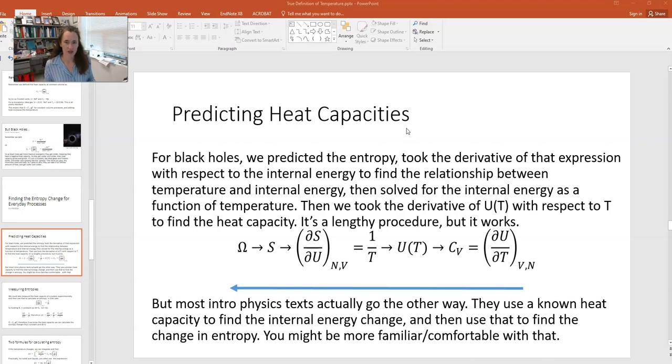Then we used the true definition of temperature, which is partial s with respect to u is 1 over T holding N and V constant, and got the internal energy as a function of temperature. Once we had the expression for u(T), then we took the partial derivative partial u with respect to T and we got a heat capacity. So we went from the multiplicity all the way to the heat capacity. It's a lengthy procedure but it actually does work.